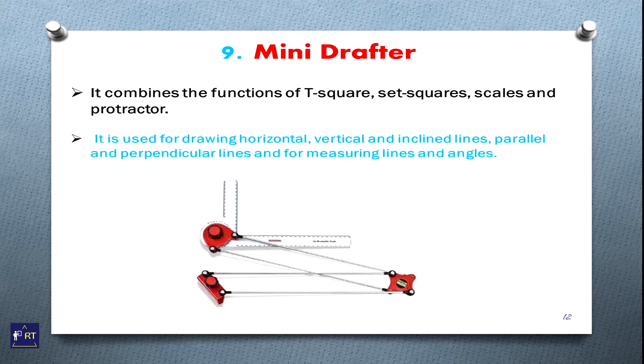Next, mini drafter. It combines the functions of T-square, set square, scale, and protractor. It is used to draw horizontal, vertical, inclined lines, parallel and perpendicular lines, for measuring lines and angles.